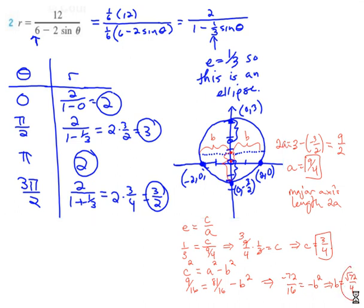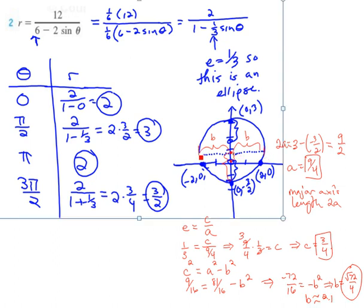This value root 72 over 4 is about 2.1. And so this ellipse opens up a total distance of 2.1 units to the right and to the left of its center and we could identify those vertices as well if we had to now.